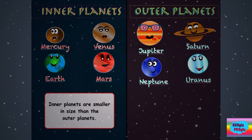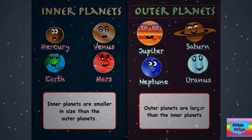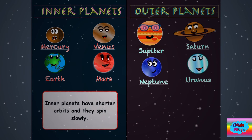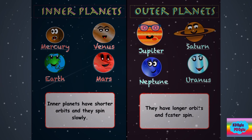Inner planets are smaller in size than the outer planets. Outer planets are larger than inner planets. Inner planets have shorter orbits and they spin slowly, while outer planets have longer orbits and they spin faster.